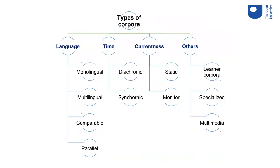Nowadays all corpora are machine-readable because they are very large, and many are available on a regular open-access basis — you only have to click to access them. Some specialised corpora are not accessible to everybody, but they are less useful for language learning and teaching anyway. There are different types of corpora: depending on the languages involved you have monolingual, multilingual, or comparable corpora — which contain texts in more than one language but on similar topics.